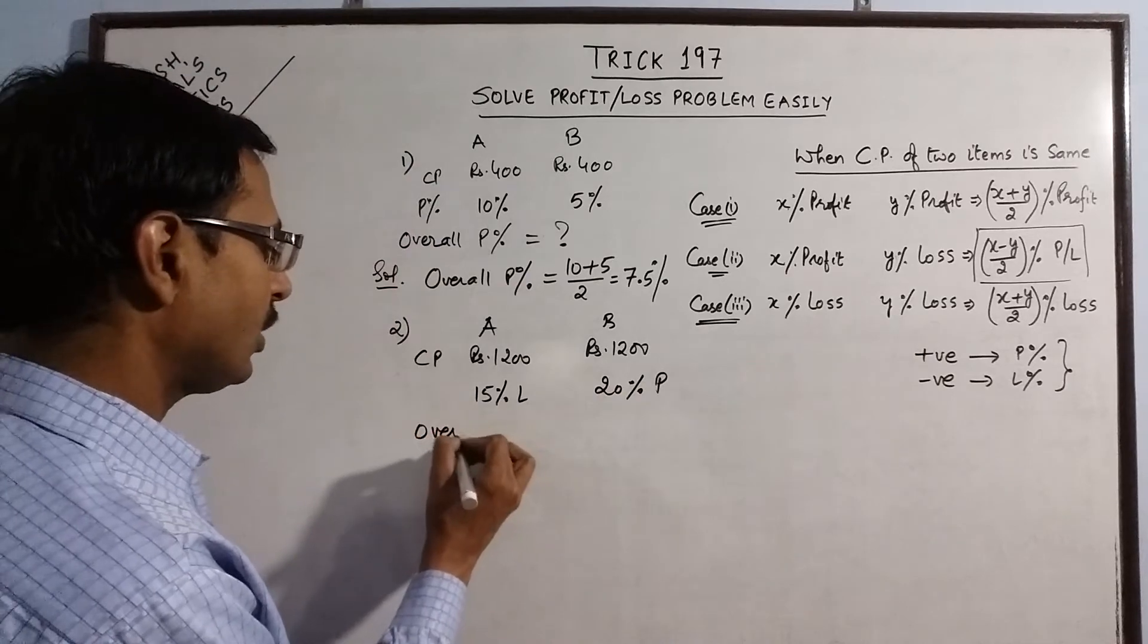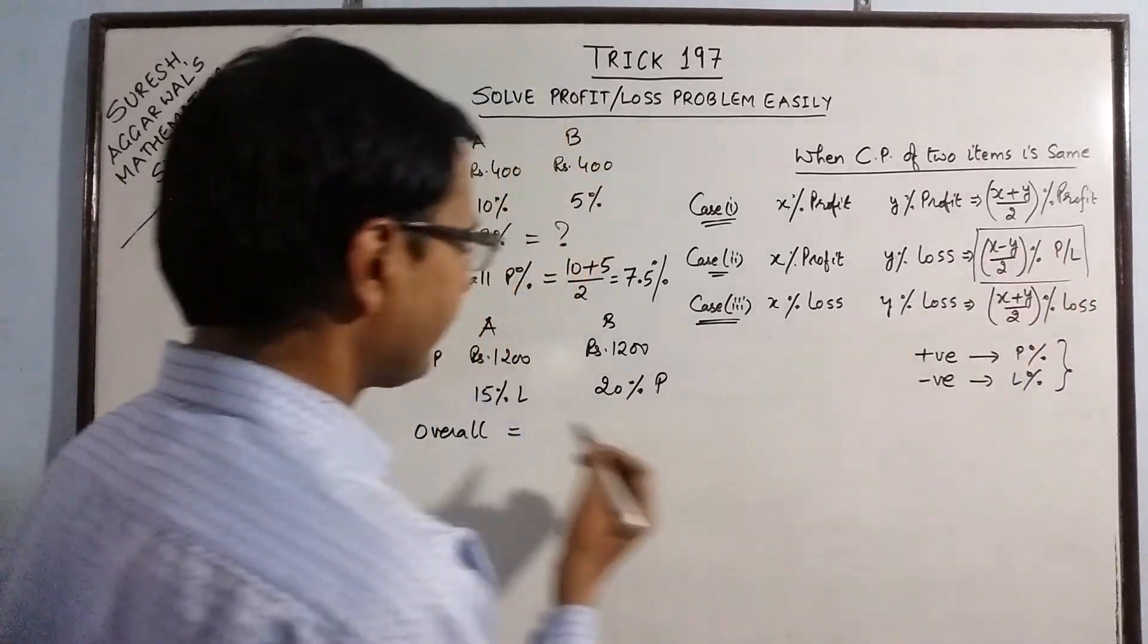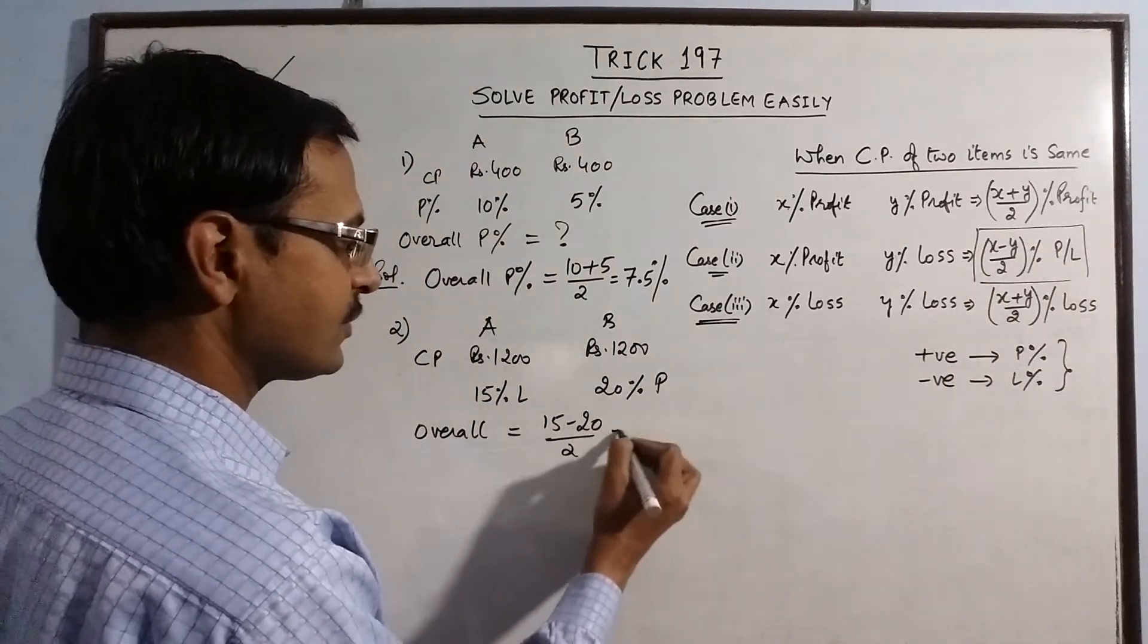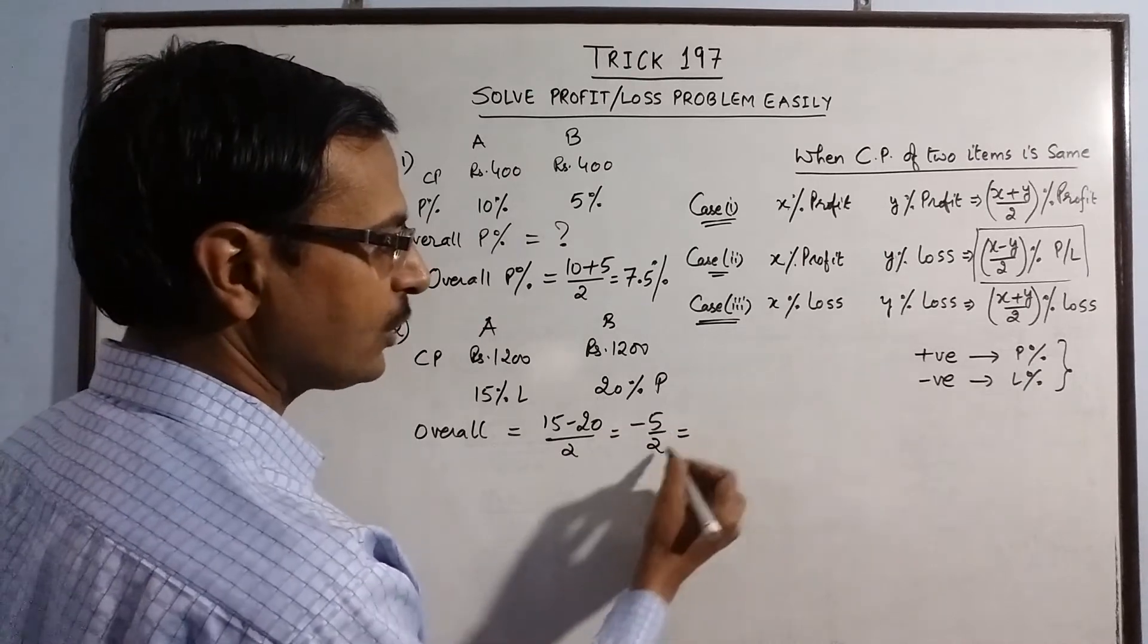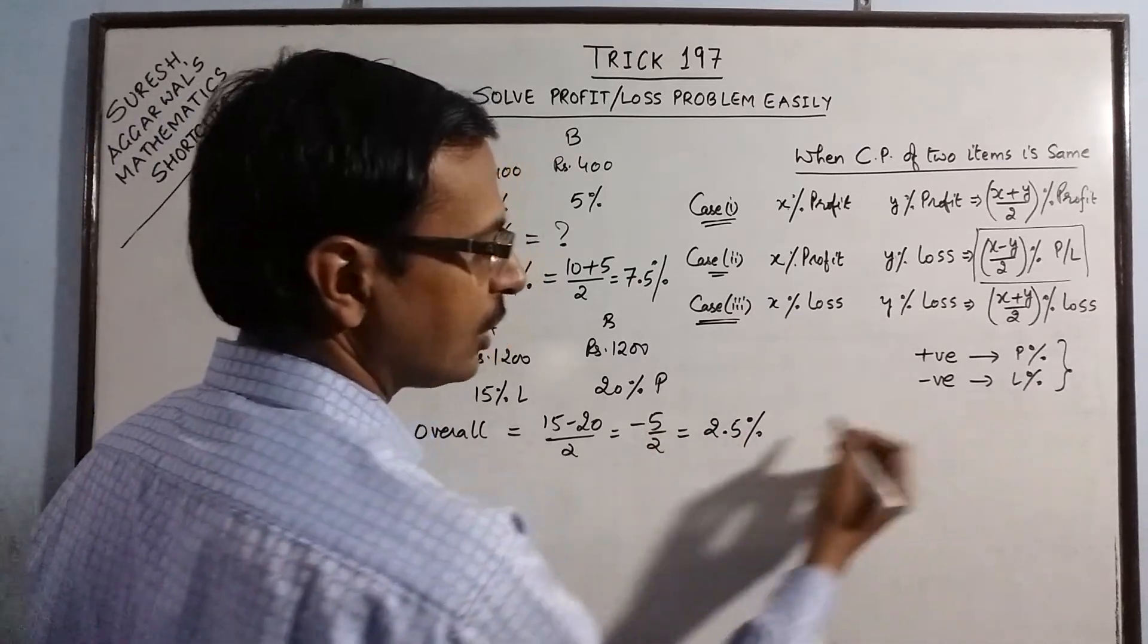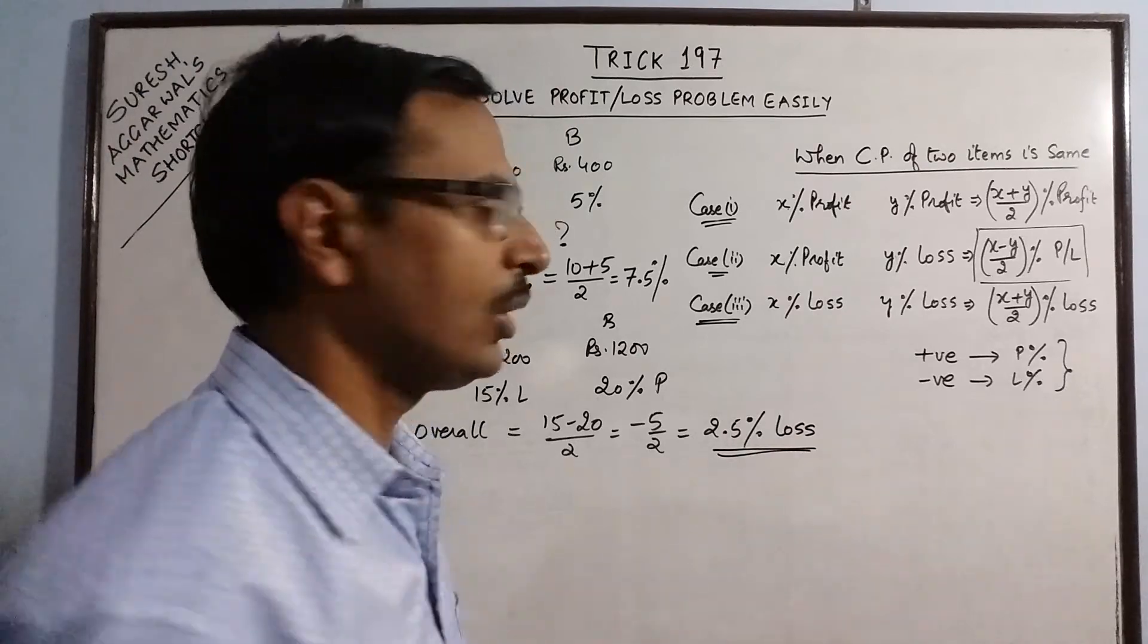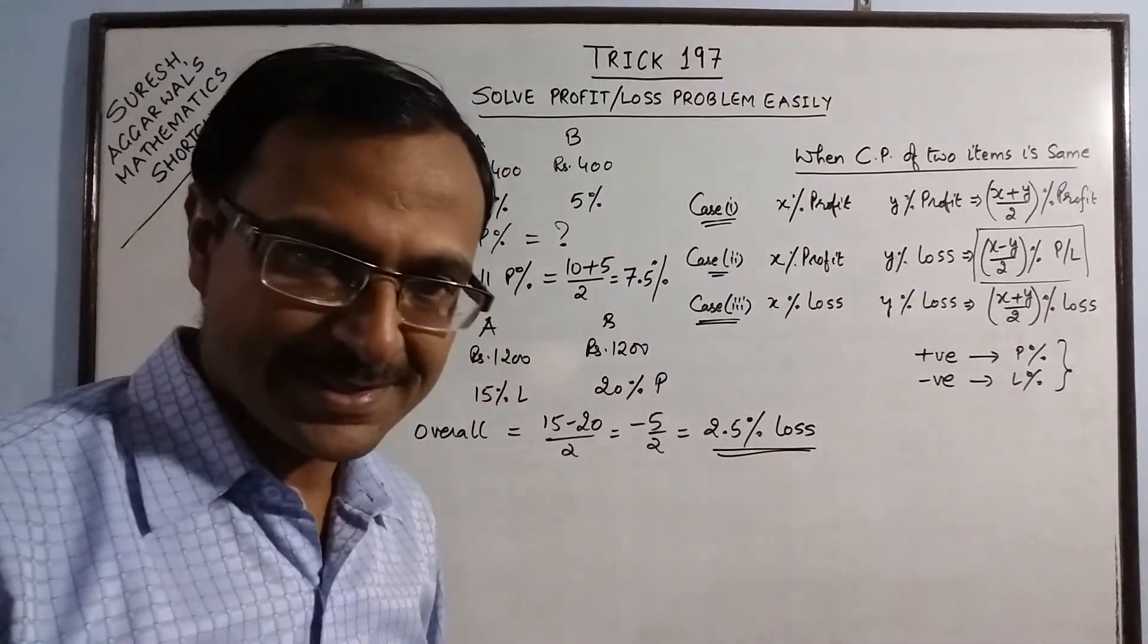Now, overall we will have, see now we have to take the difference, so 15 minus 20 upon 2, so this will give you a negative result, minus 5 by 2. So 5 by 2 is 2.5% and negative sign denotes loss. So, we will have an overall loss percent of 2.5% in this case.